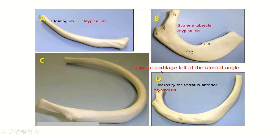In total there are 12 ribs. Ribs 3 to 9 are the typical ribs, while the 1st, 2nd, 10th, 11th, and 12th are atypical ribs.